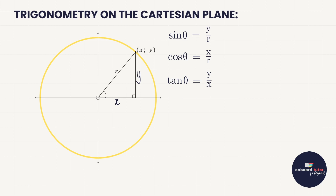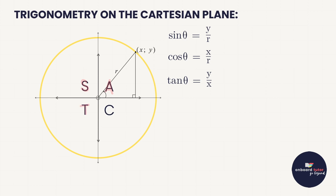We can draw an arm in any quadrant of the Cartesian plane, and that leads to the CAST rule. In quadrant one, all ratios are positive. In quadrant two, sine is positive, meaning cos and tan are negative. In quadrant three, tan is positive, meaning sine and cos are negative. In quadrant four, cos is positive, meaning sine and tan are negative.